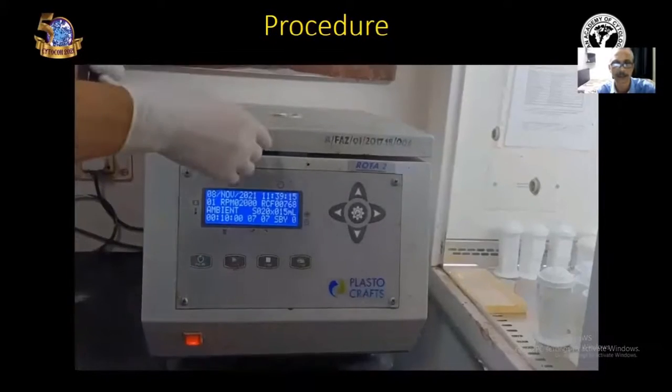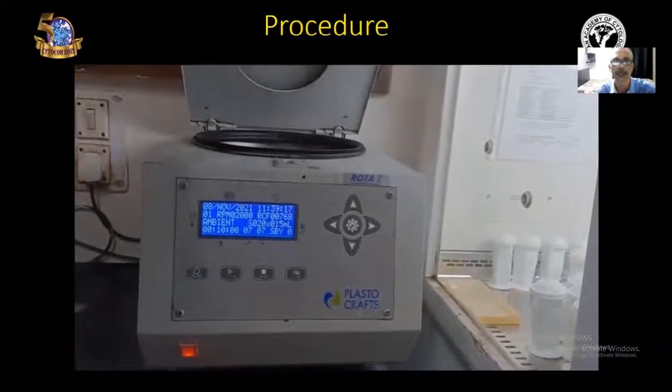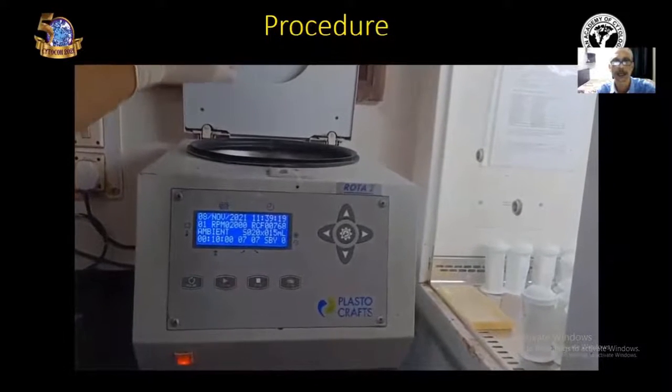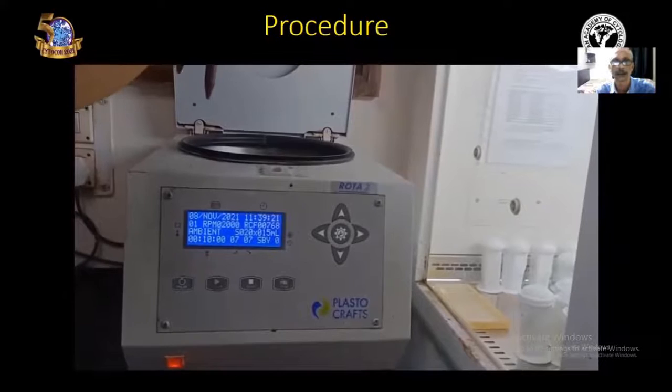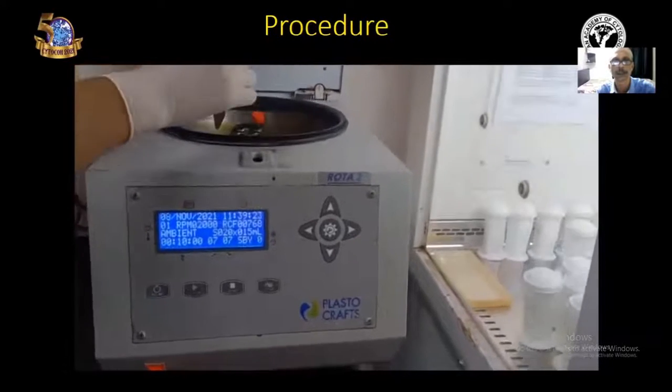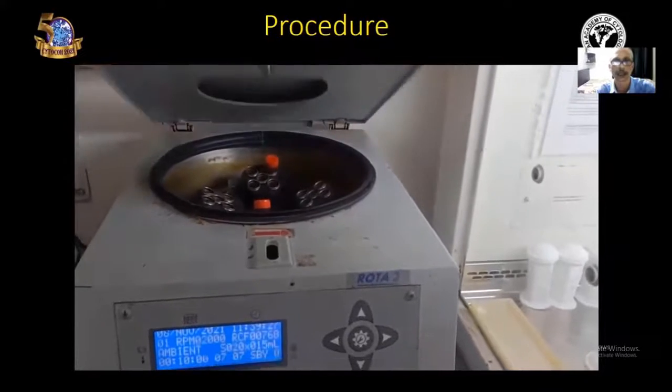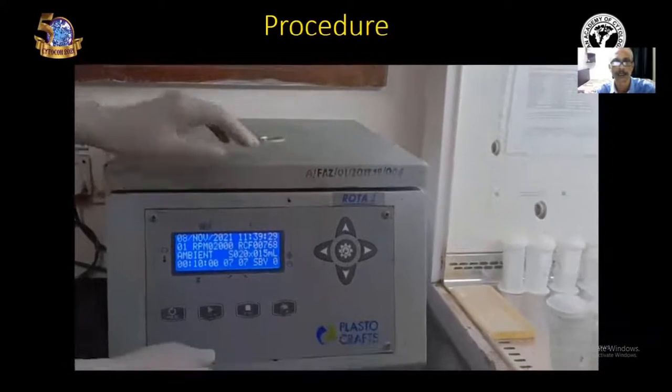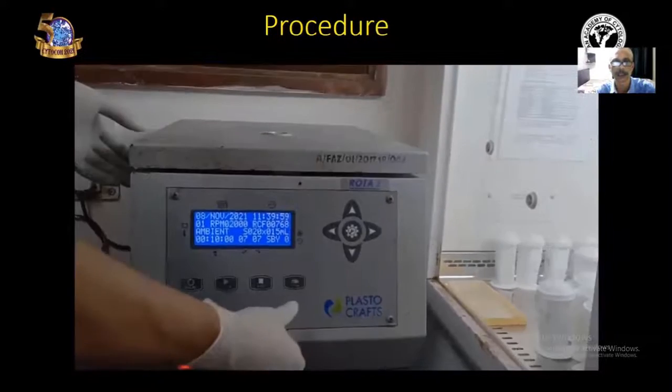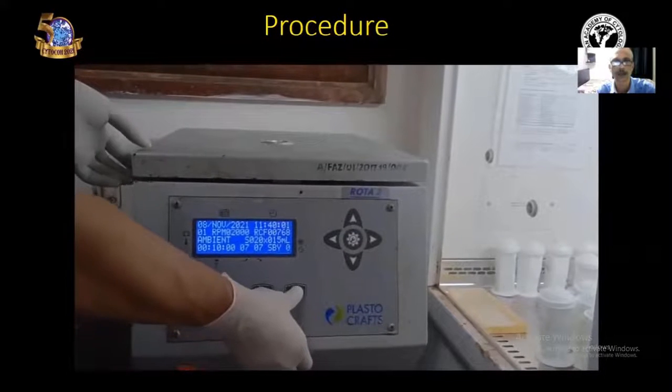Next step is centrifugation. Take the sample to the centrifuge machine and keep it in opposite chambers. Close the centrifuge machine and start the machine. Centrifugation is done at 2000 RPM for 10 minutes.